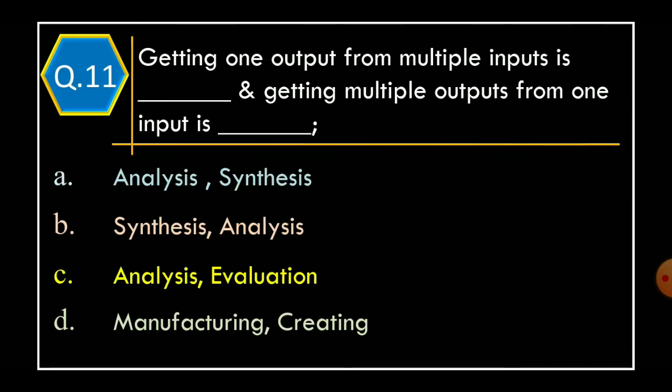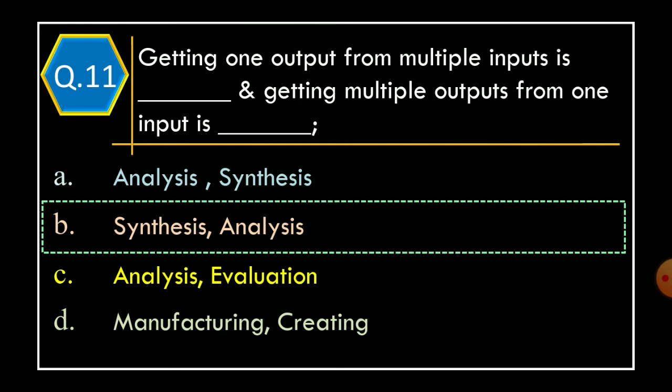Question 11: Getting one output from multiple inputs is … and getting multiple outputs from one input is … Option A: Analysis, Synthesis; Option B: Synthesis, Analysis; Option C: Analysis, Evaluation; Option D: Manufacturing, Creating. The correct option is Option B: Synthesis, Analysis.